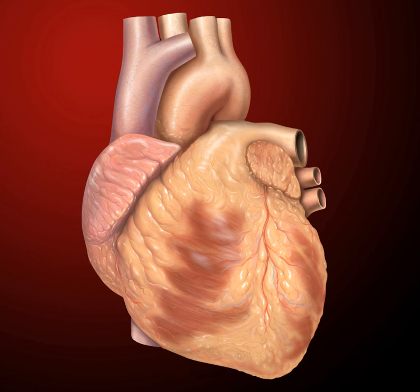The heart is a muscular organ in most animals, which pumps blood through the blood vessels of the circulatory system. Blood provides the body with oxygen and nutrients, as well as assisting in the removal of metabolic wastes.